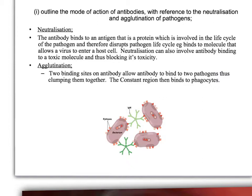Having looked at the structure of antibodies, this slide investigates the mode of action of antibodies. There are various ways antibodies work, but we'll focus on two modes of action: neutralisation and agglutination. Because of the structure of antibodies — because there are two variable regions, each of which can bind to an antigen — an antibody can bind to antigens on two different pathogens, forming a cross-bridge between them and clumping pathogens together.